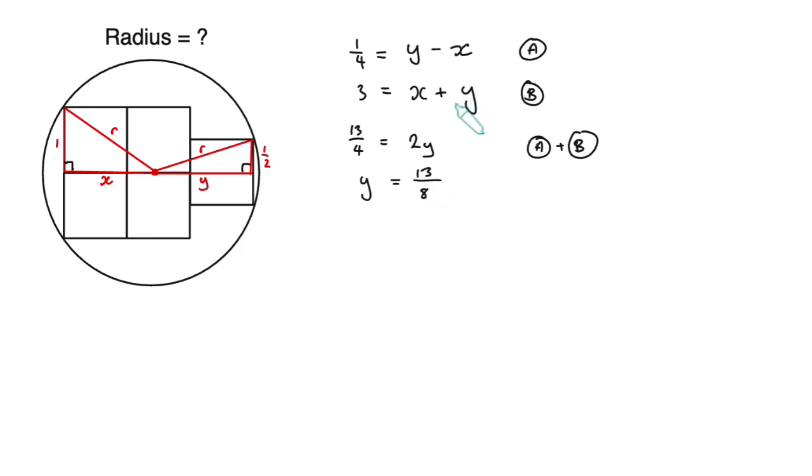You could solve the original problem without working out x here, but we could also get x easily by subtracting the first equation from the second. That would give us two and three quarters equals two x. Two and three quarters is 11 over 4, so two x is 11 over 4 and x equals 11 over 8.